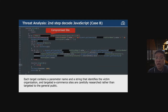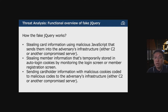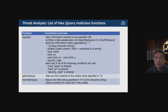Each target contains a parameter name and a string that identifies the victim organization. Targeted e-commerce sites are carefully researched by the attacker rather than targeting the general public. The fake jQuery works by stealing card information using malicious JavaScript that sends data to the adversaries' infrastructure, stealing member information temporarily stored in auto-login cookies by monitoring the login or member registration screen. These functions have specific naming conventions used by attackers in their compromised sites, which we can use to identify the attacker's ID.